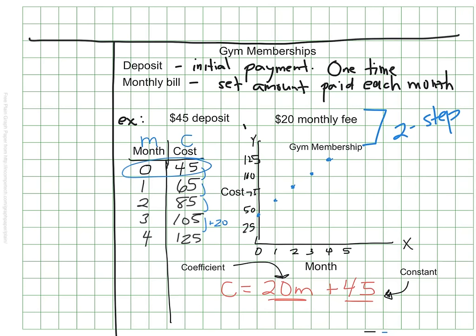So we saw it in the table. In the graph, we can see it as well, because in the graph, the graph starts on the y-axis at $45, and then you can see if we checked that it would jump $20 every time. And that's where the $20 comes from. So the two-step equation actually shows up both in the table and in the graph, as well as in the equation itself.